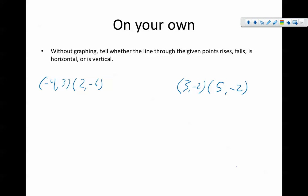Alright, here's the two that I'd like you to do on your own. Let's check your answers. Now we're going to calculate the slopes. We get negative nine over six which reduces to negative three halves. This is a negative number for my slope, therefore it is falling.